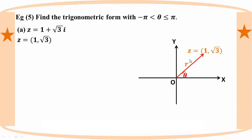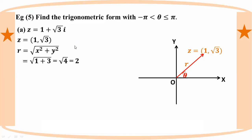We find r as the square root of 1 squared plus root 3 squared, which gives the square root of 1 plus 3, equal to the square root of 4, which is 2. So r equals 2.